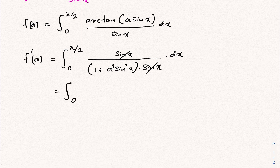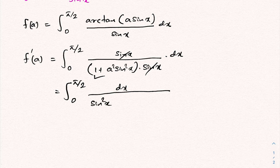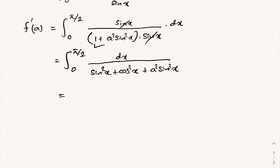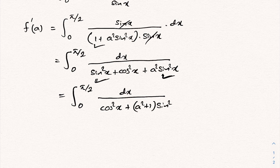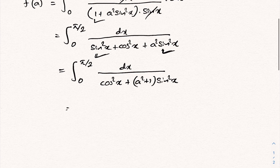As a next step, we have the integral from 0 to π/2 of dx over 1. Instead of 1, we apply sin²x + cos²x, plus a²·sin²x. So the denominator becomes cos²x plus sin²x(1 + a²), grouping the sin²x terms with the common factor (a² + 1).